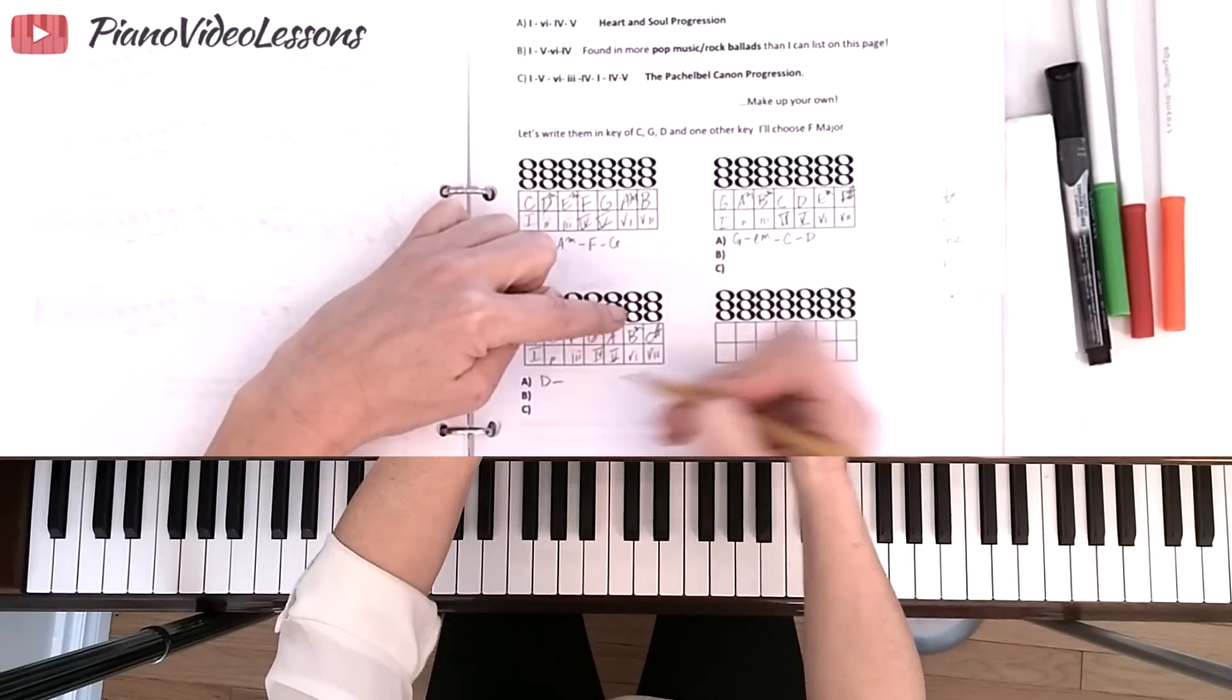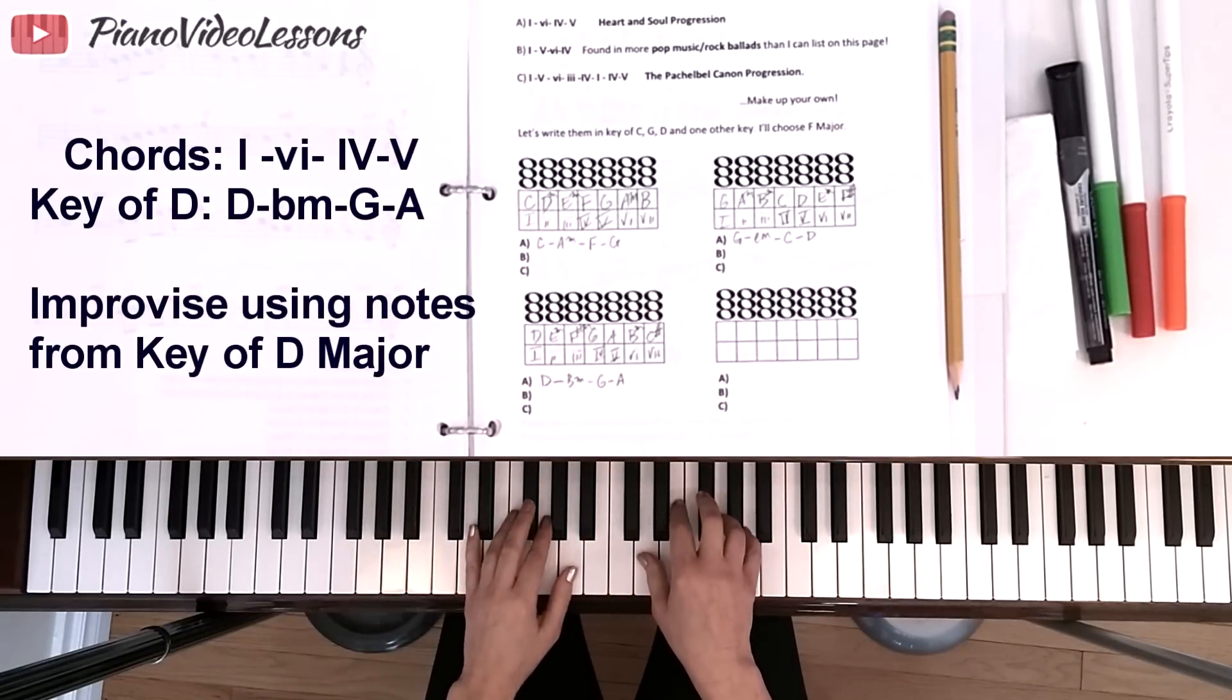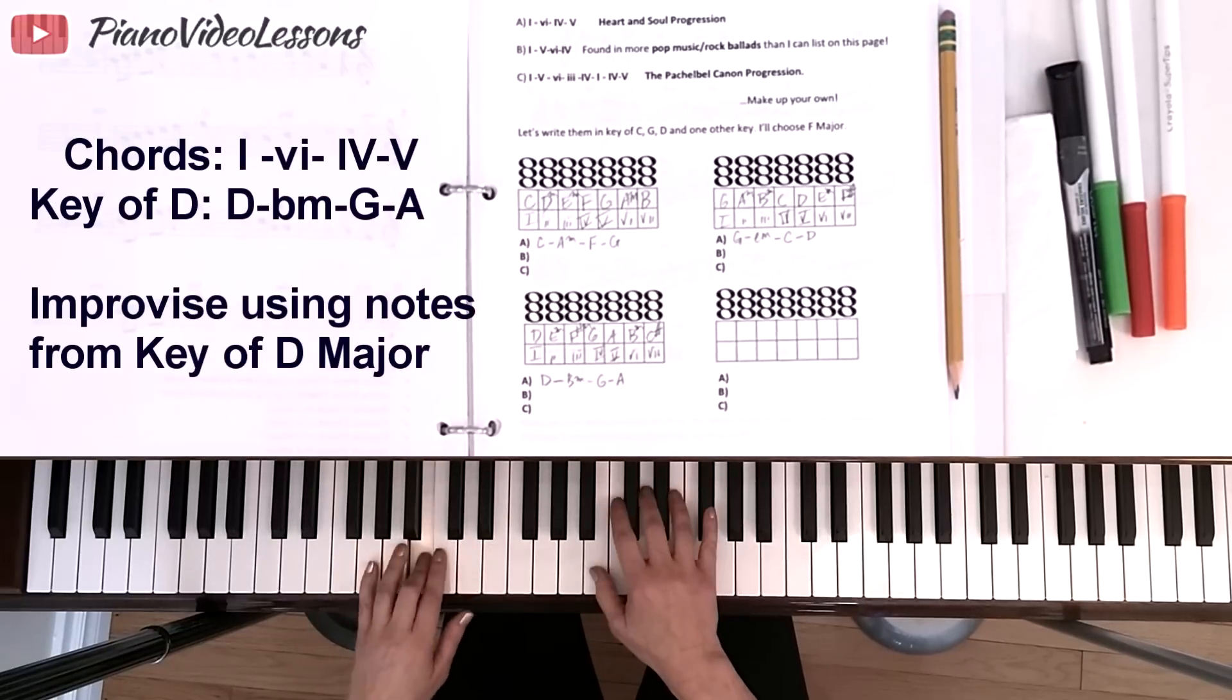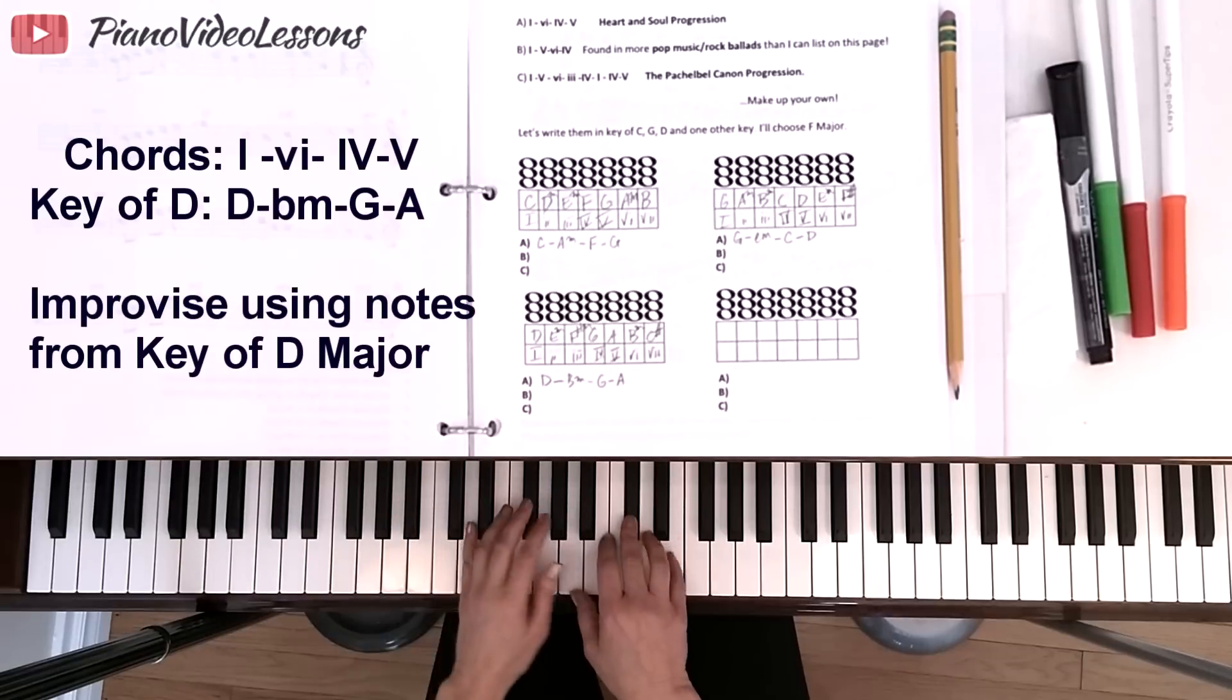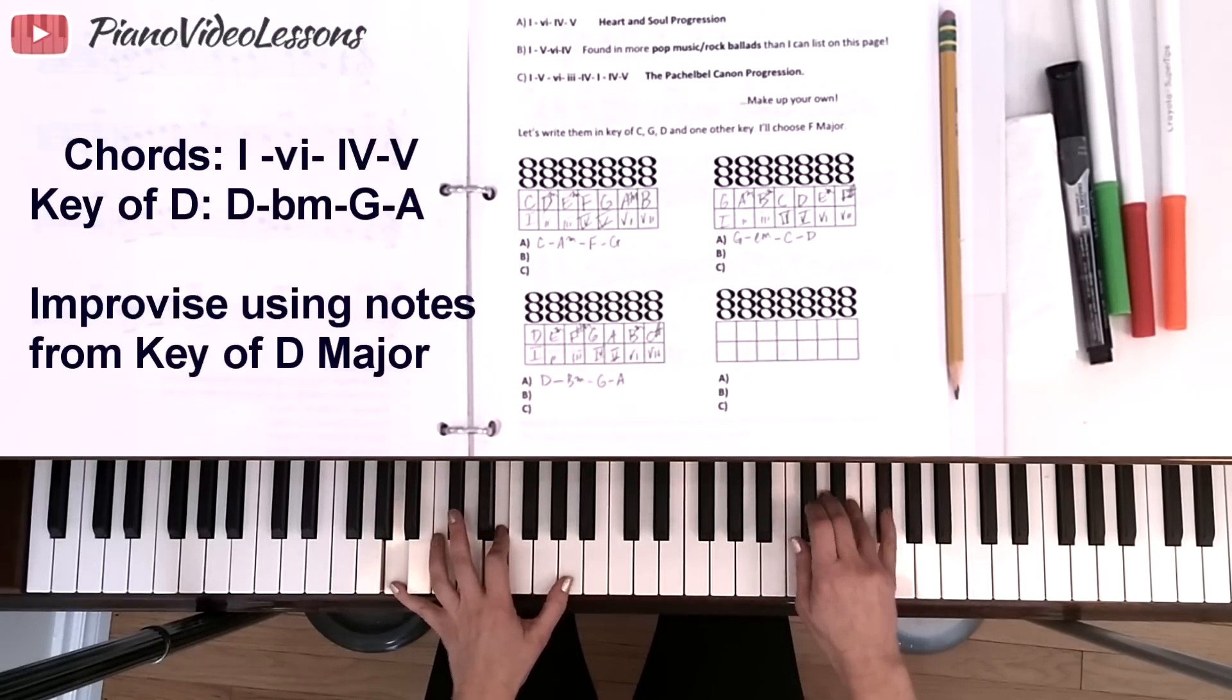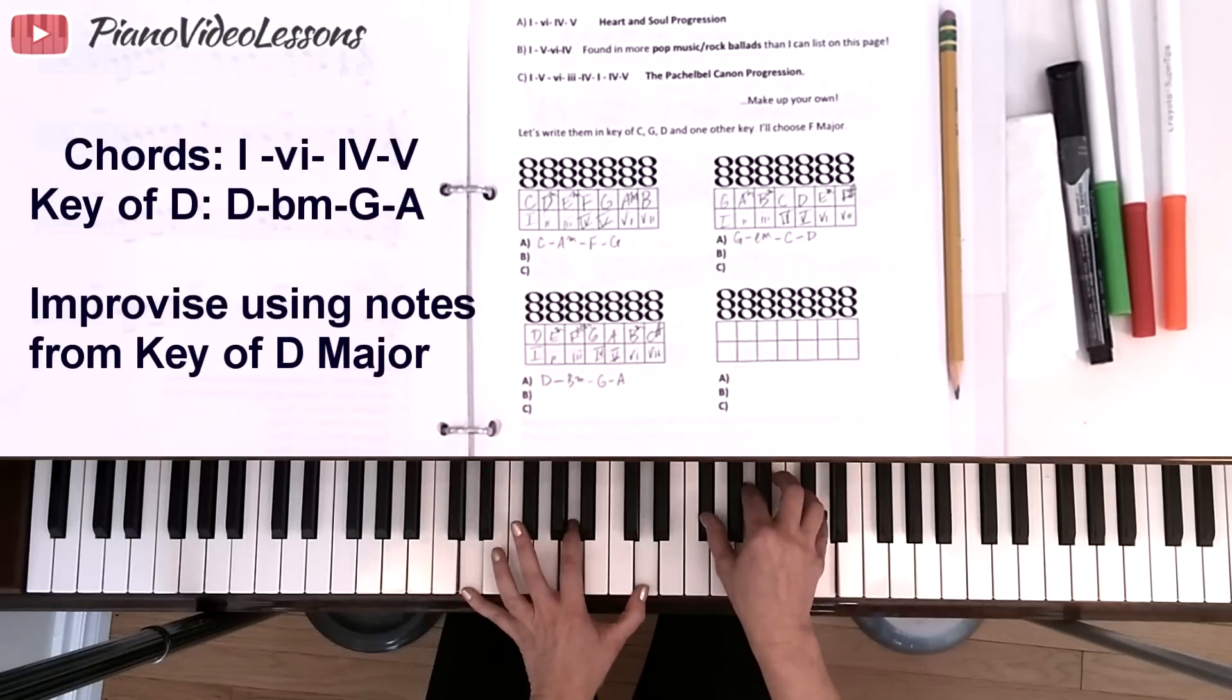When we play the Heart and Soul progression in the key of D, we start with the 1 chord, which is D. We go to the 6 chord, which is B minor. Then we go to the 4 chord, which is G, and then we go to the 5 chord, which is A. It's helpful for you to start remembering which chord is which number. This is the 1 to the 6 to the 4 to the 5: D major, B minor, G major, A major. You can improvise, but you have to make sure that you use the sharp of C and the sharp of F and end on the 1 chord.